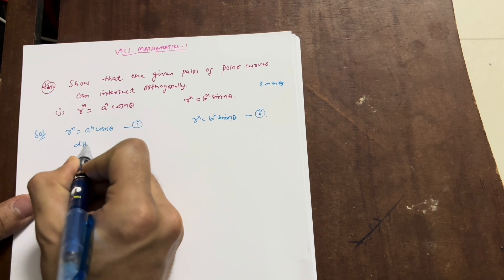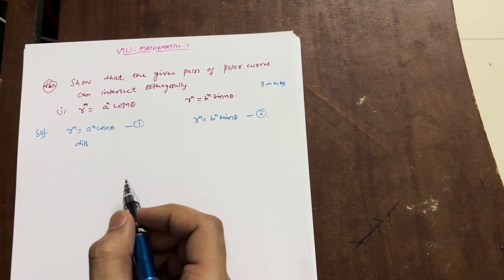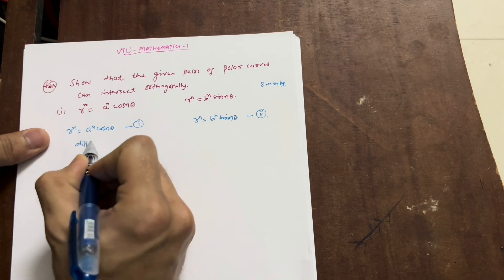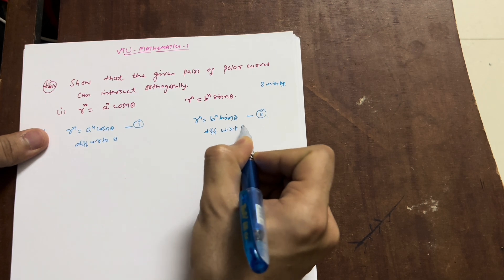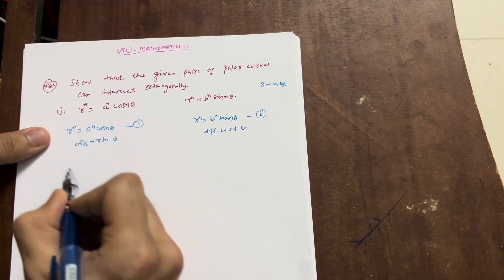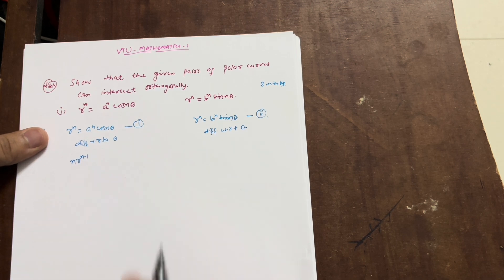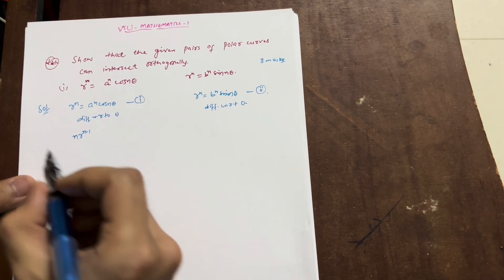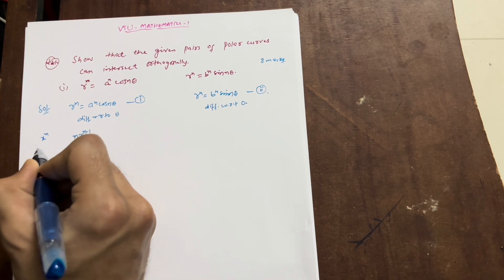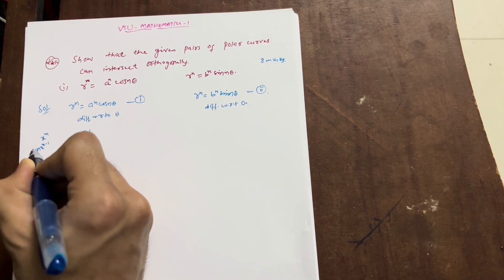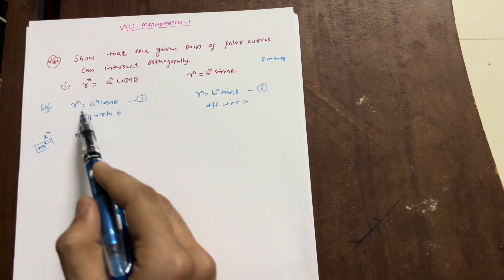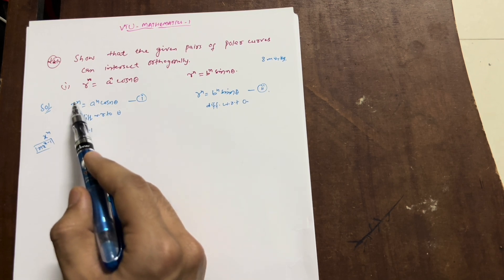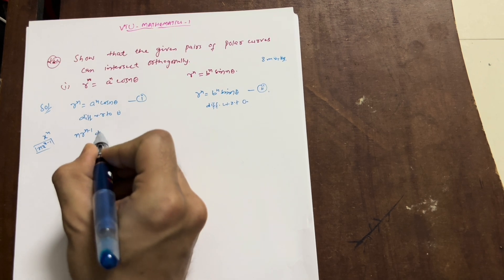The procedure is the same as in the last problem. Differentiate with respect to θ. The differentiation of r^n is n·r^(n−1) — you should know the basic differentiation formula: d/dx(x^n) = n·x^(n−1). Here instead of x we have r, so n·r^(n−1) is the differentiation of r^n, and the internal differentiation of r with respect to θ is dr/dθ.